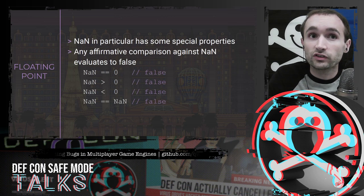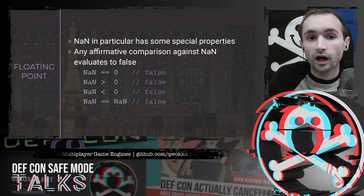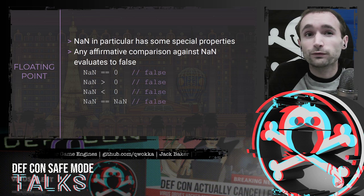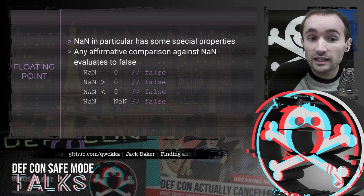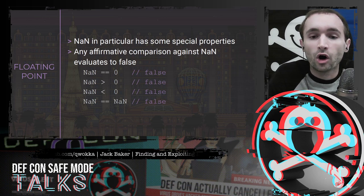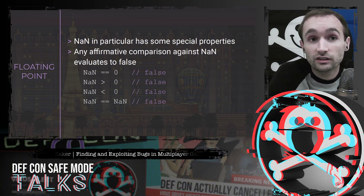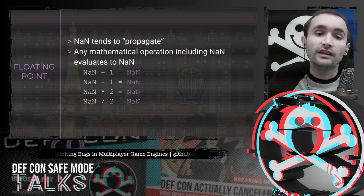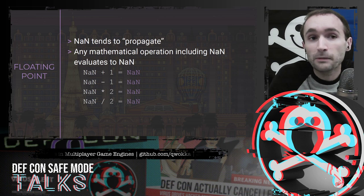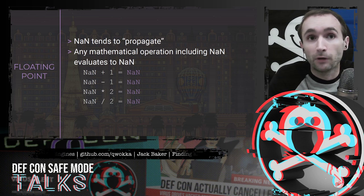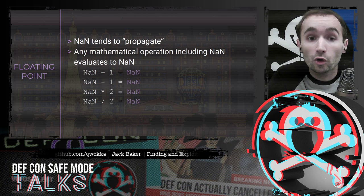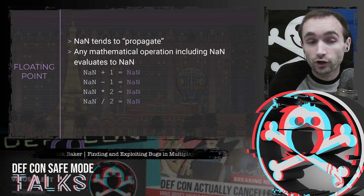NaN is the result of undefined mathematical operations. Any non-zero number divided by zero gives infinity; zero divided by zero gives NaN; square root of negative one also gives NaN. NaN has two really unique properties. First, any affirmative comparison against NaN evaluates to false — NaN == 0 is false, NaN > 0 is false, NaN < 0 is false, even NaN == NaN is false. Second, NaN propagates: any mathematical operation where NaN is an operand evaluates to NaN, regardless of how complex the operation.